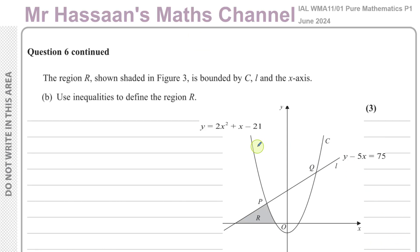Now for part B, it says the region R, shown shaded in figure 3, is bounded by the curve C, the line L, and the x-axis. Use inequalities to define the region R. So basically, the region R is above the x-axis. The x-axis has equation y equals 0, so it's in the region where y is greater than or equal to 0. I'm going to put equal to because there's solid lines here.